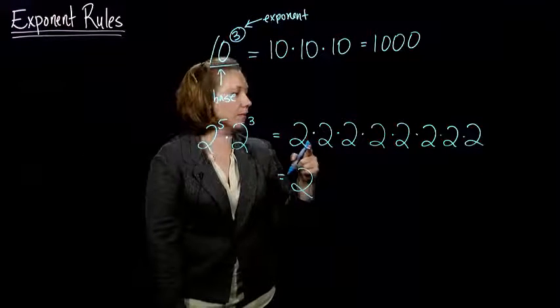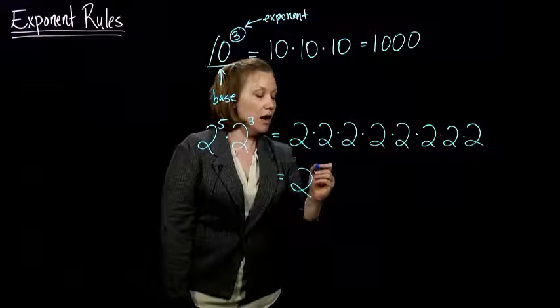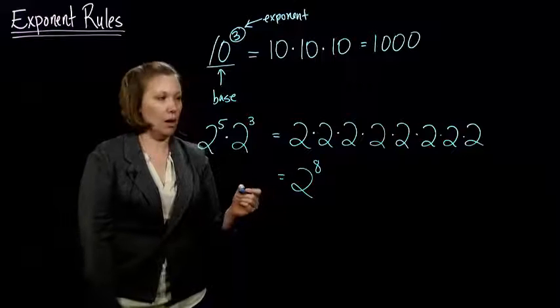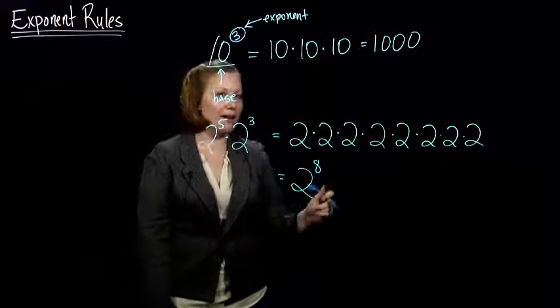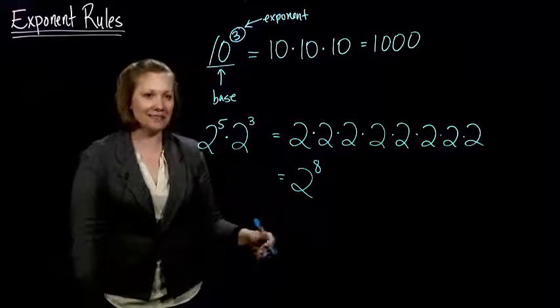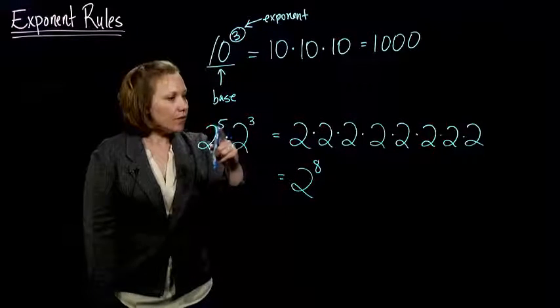If I count up the number of 2's I have, I can take this whole thing and write it as 2 to some power. Well, let's count them up. We've got 1, 2, 3, 4, 5, 6, 7, 8. I've got 2 to the 8th power, and if you multiply, you can put that in your calculator, but it's a fairly good size number, so we're not going to do it.